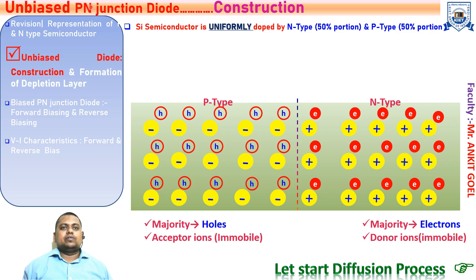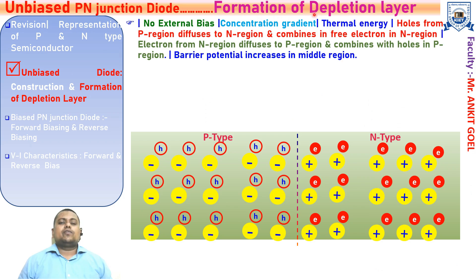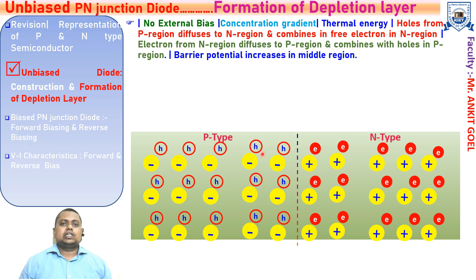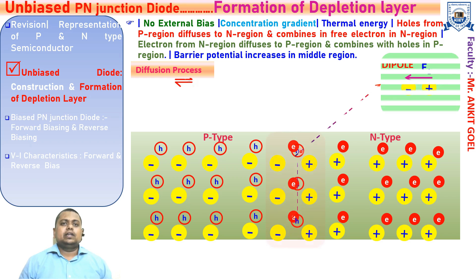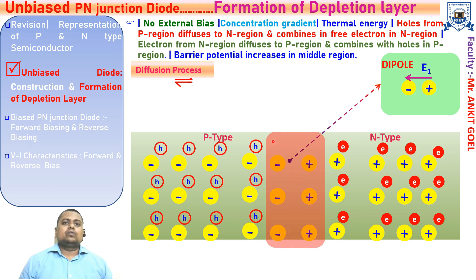Let us start with the diffusion process and see what happens as soon as the doping has been done in these two portions. In the silicon crystal, half of the portion doped with P-type has a high concentration of holes, while the other half doped with N-type has a very high concentration of electrons. Due to thermal energy and this concentration gradient, a process called diffusion starts at the vicinity of the middle of the silicon crystal. Electrons and holes in the middle of the region, due to the diffusion process, recombine and leave behind a region depleted of free charge carriers.